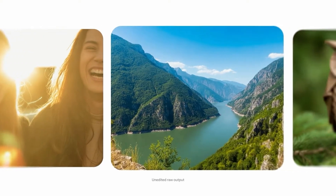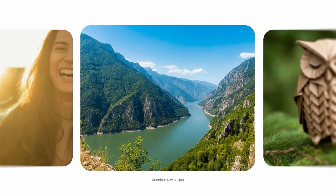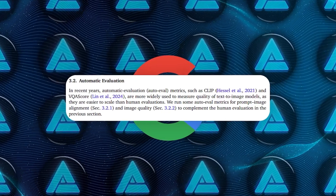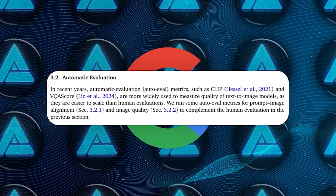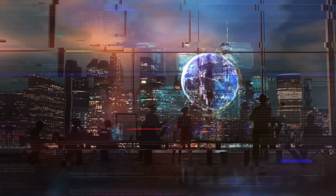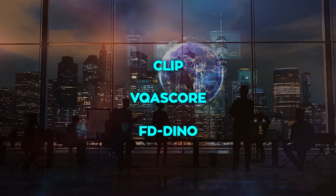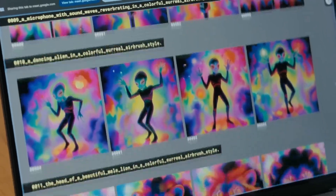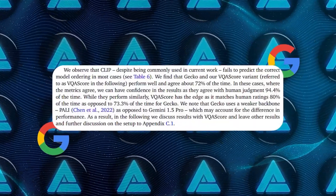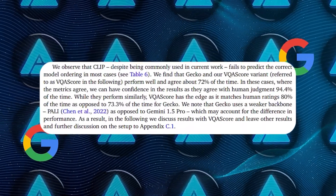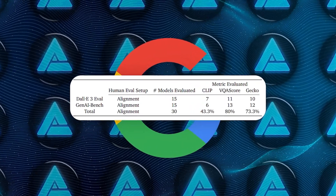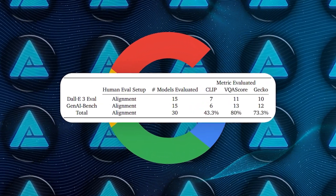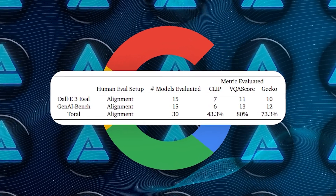It's not just humans who think Imagen 3 is top-notch. Google also used automated evaluation metrics to measure how well the images matched the prompts and how good they looked overall. They used metrics like CLIP, VQS score, and FD dyno, which are all designed to judge the quality of the generated images. CLIP didn't always agree with the human evaluations, but VQS score did, consistently ranking Imagen 3 at the top, especially when it came to more complex prompts.